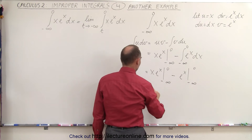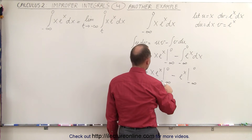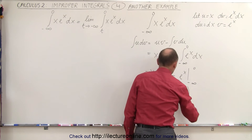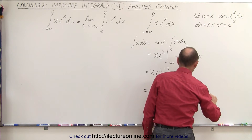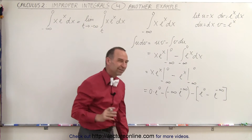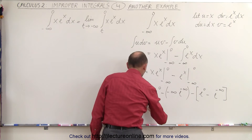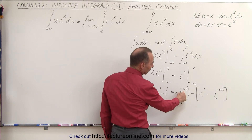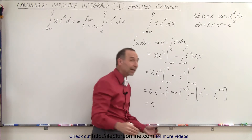Now we simply plug in those limits. Plugging in the upper limit gives 0·e⁰, and plugging in the lower limit gives minus infinity times e^(minus infinity). For the second term, e⁰ minus e^(minus infinity). When we evaluate, e⁰ is 1, so 0 times 1 is 0. The lower limit gives infinity divided by e^(infinity) — since e^(minus infinity) goes to the denominator as e^(plus infinity) — so we end up with infinity divided by infinity, which is undefined.